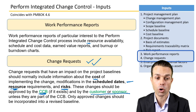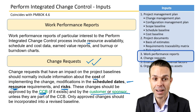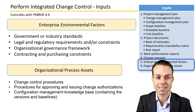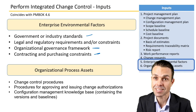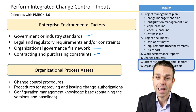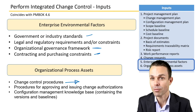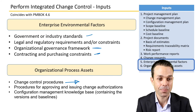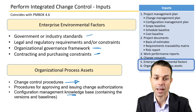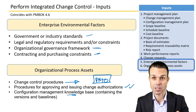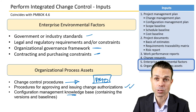Only approved changes should be incorporated back into your project management plan or revised baselined documents. With many of these things, we've got enterprise environmental factors and organisational process assets: any regulations or regulatory standards, contracting or purchasing constraints, and organisational governance frameworks in the organisation you're working in. There may be existing change control procedures or templates that help you — you just fill them in. There might also be a configuration management knowledge base or procedures for issuing and approving change authorisations already in place, such as those from a project management office.